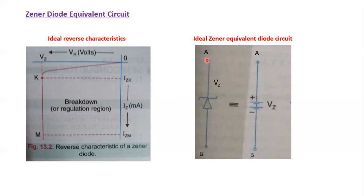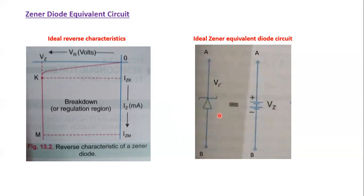Now, if you consider the equivalent circuit of a Zener diode — shown here is the Zener diode with its symbol — the equivalent circuit is something like a battery, because the voltage across the Zener remains constant in the breakdown region, just like a battery. The voltage across terminals A and B is VZ', and this is equivalent to a battery providing a voltage VZ.